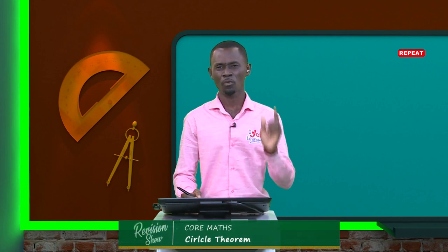Apologies, we had some technical challenges. We were talking about equidistance and locus. Equidistance just means equal distance, and locus is the place, the point, the location, the path traced. Let's illustrate it.